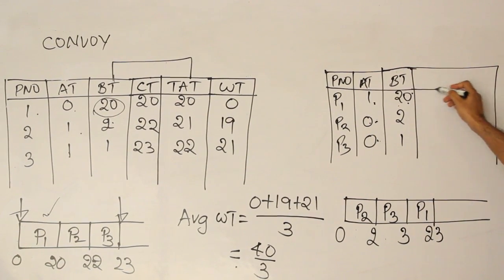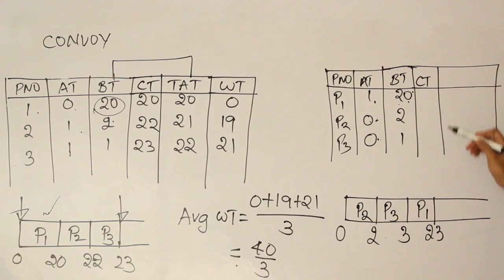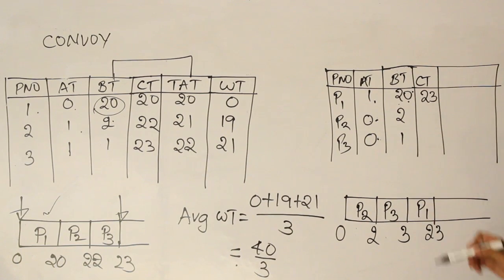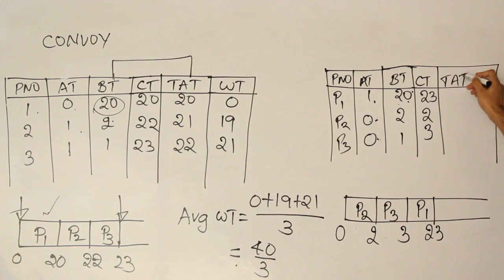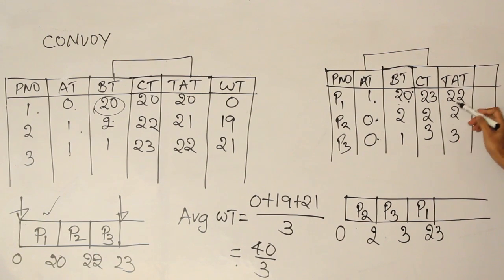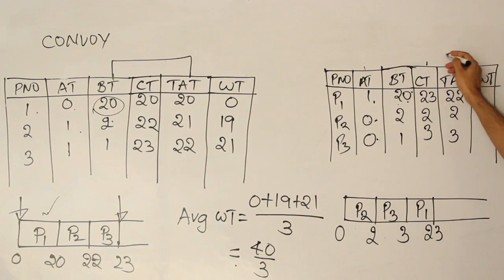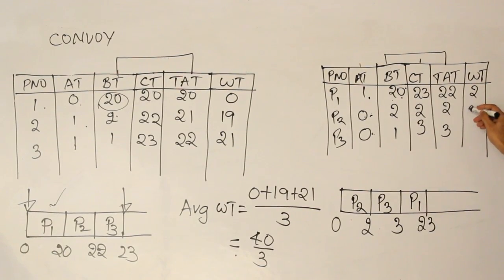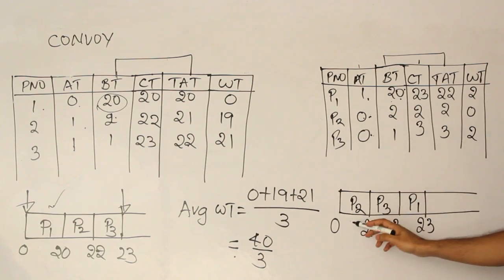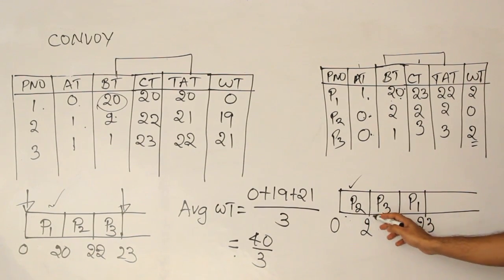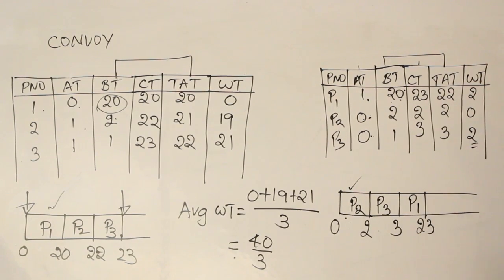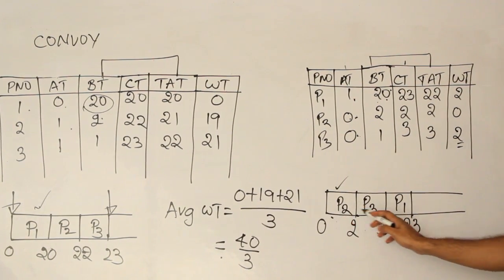Writing the completion times: P1 = 23, P2 = 2, P3 = 3. Turnaround time (completion minus arrival): P1 = 22, P2 = 2, P3 = 2. Waiting time (turnaround minus burst time): P1 = 2, P2 = 0, P3 = 2. P2's waiting time is 0 because it was scheduled immediately. P3 arrived at 0 but was scheduled at 2, so it waited 2. P1 arrived at 1 and was scheduled at 3, so it waited 2.